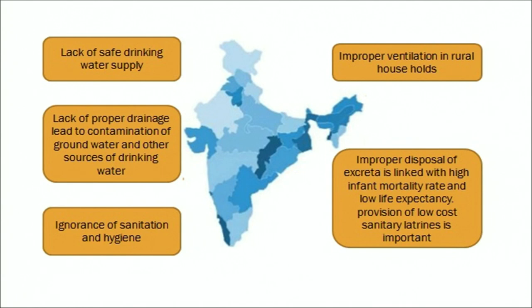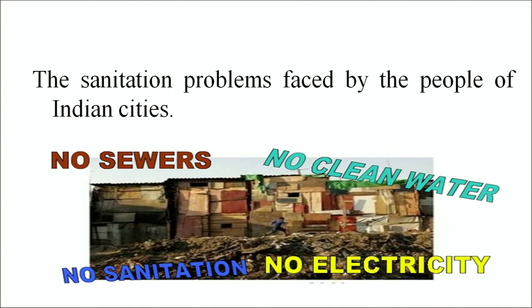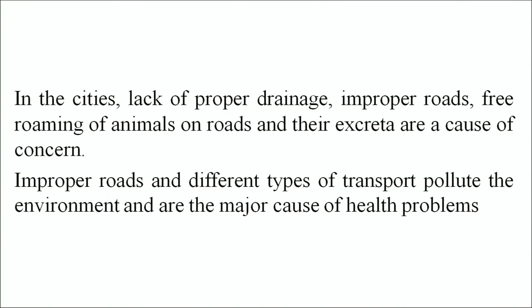Furthermore, women and girls in rural India have limited access to feminine hygiene products. The problems faced by rural people are: lack of safe drinking water supply, lack of proper drainage leading to contamination of ground water and other sources of drinking water, ignorance of sanitation and hygiene, improper ventilation in rural households, and improper disposal of excreta. The sanitation problems faced by people of Indian cities include no sewer, no clean water, no sanitation, no electricity. In cities, lack of proper drainage, improper roads, and free roaming of animals on roads and their excreta are a cause of concern.